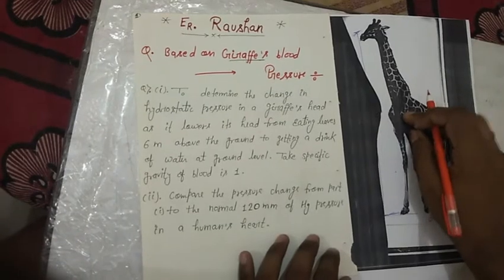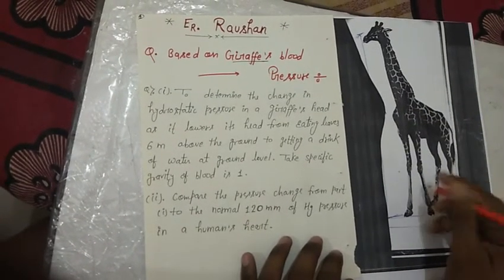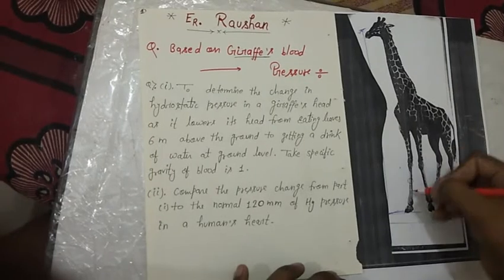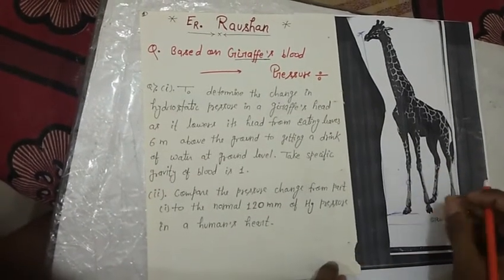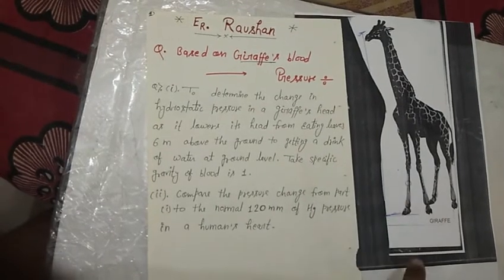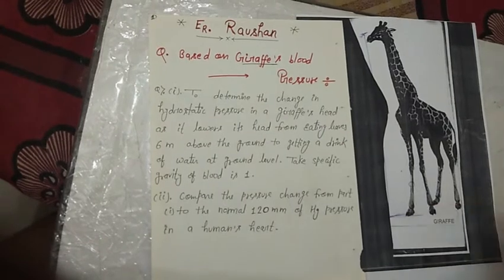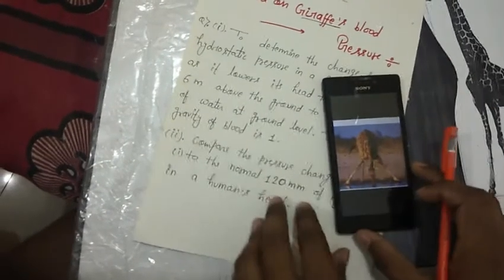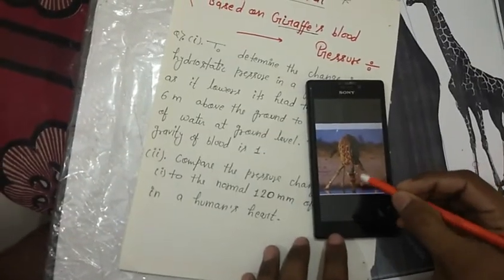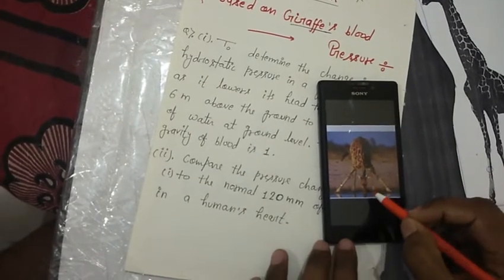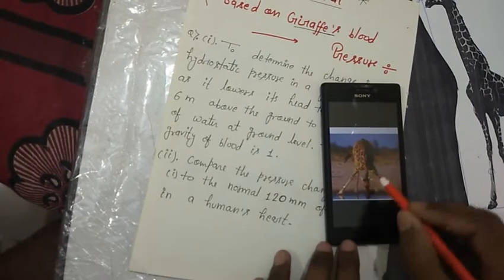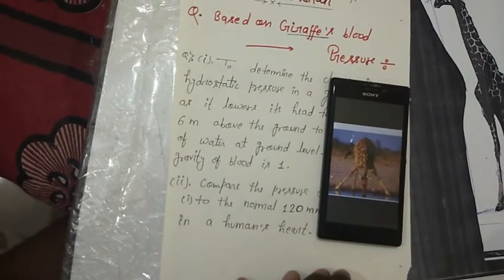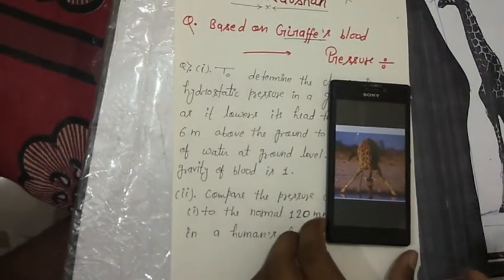To prevent blood pressure rupturing, giraffes have a special mechanism to maintain their blood pressure. The leg has a special tight sheath to prevent blood pressure rupturing. When giraffes lower their head, this maintains their blood pressure. When giraffes lower their head to drink water, their legs spread out to maintain blood pressure and prevent rupturing of the circulatory system.